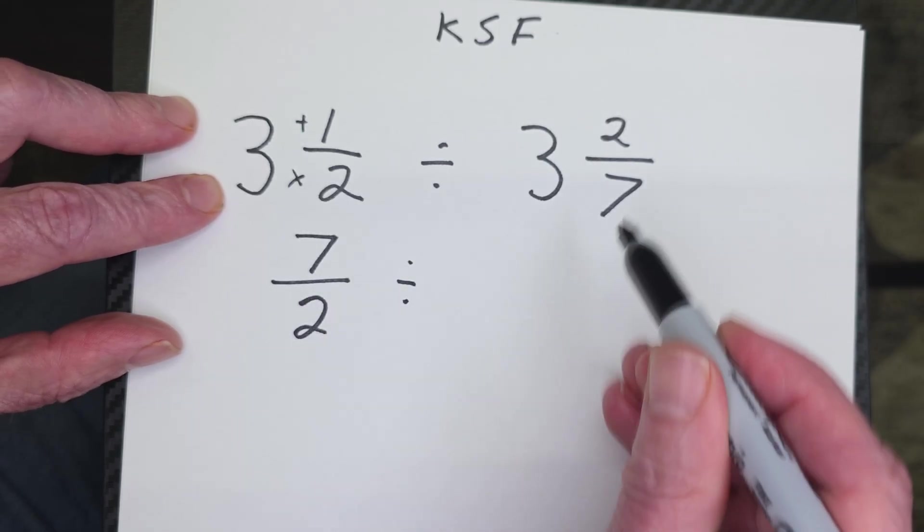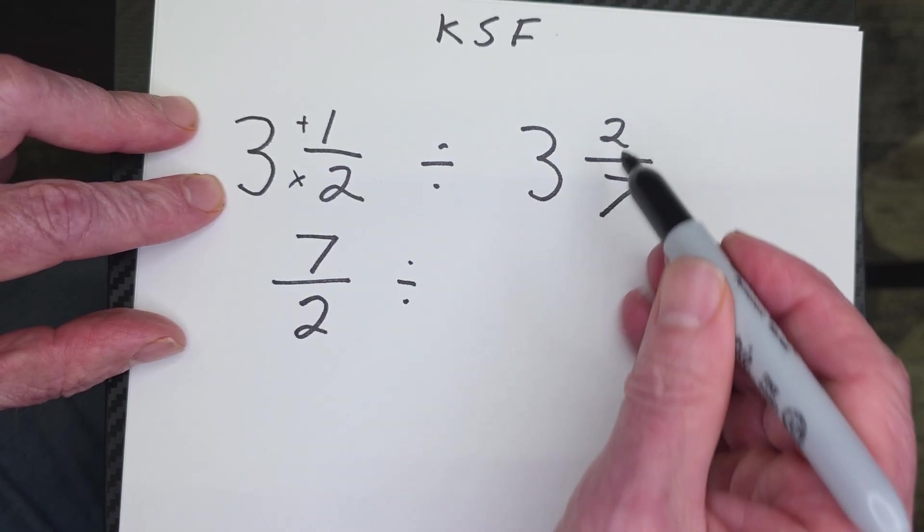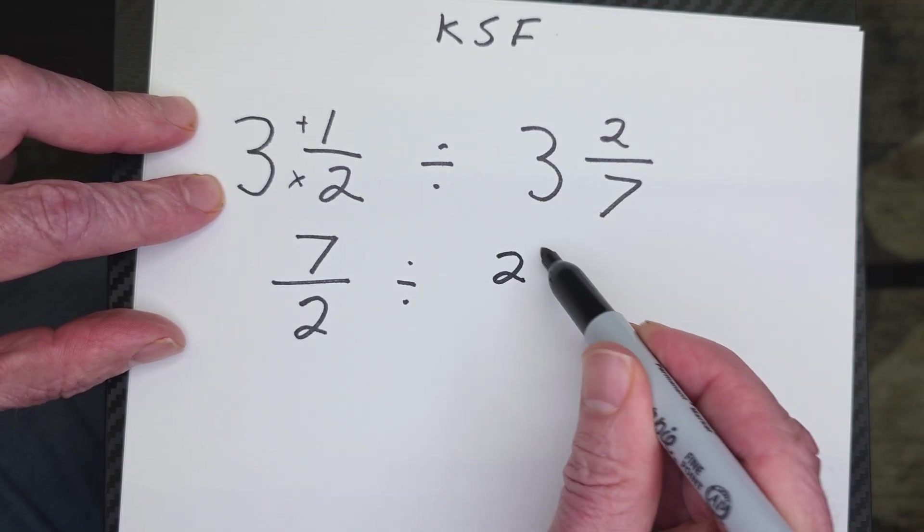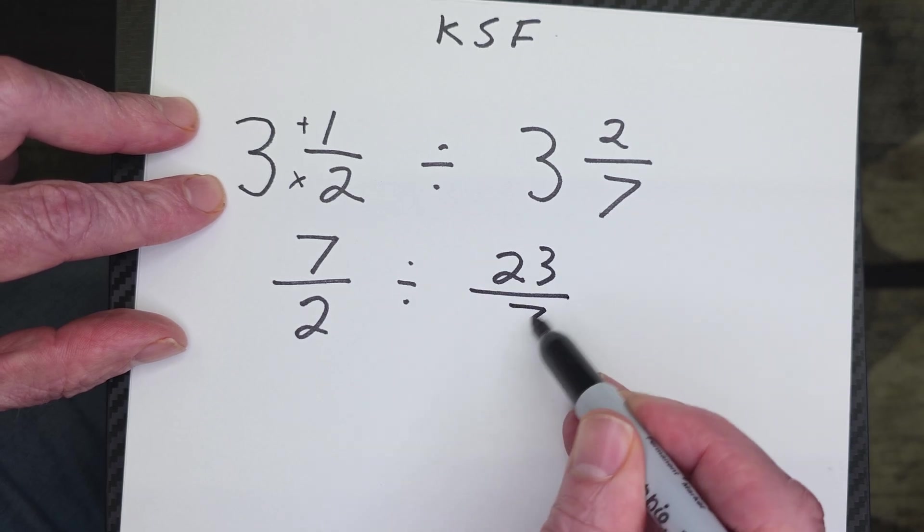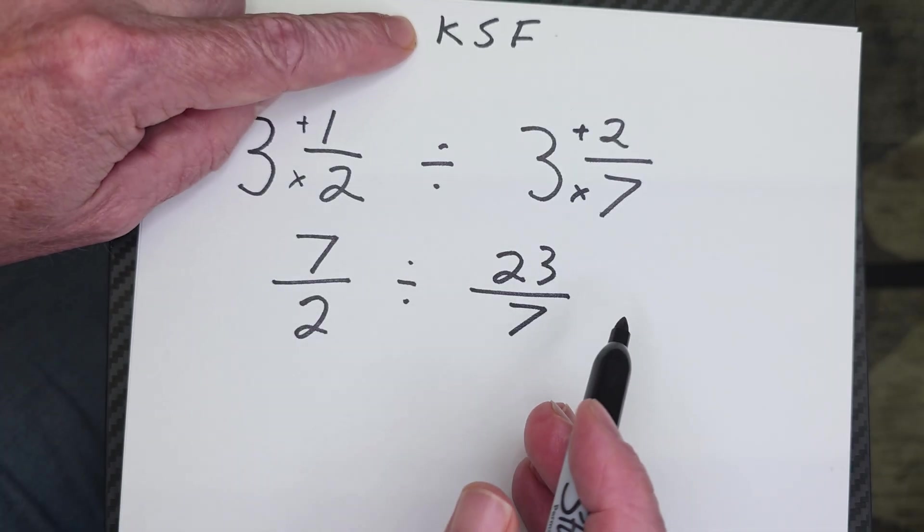And then 7 times 3 equals 21, 22, 23. So I put 23 right here over 7. Remember, we multiplied here, and then we add right there. Now we do that secret formula. Don't tell anybody about that secret formula there.